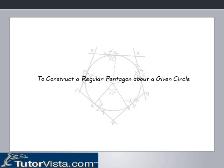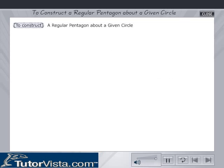To construct a regular pentagon about a given circle. A pentagon is a five-sided closed figure. Now let's see how to construct a pentagon about a given circle.